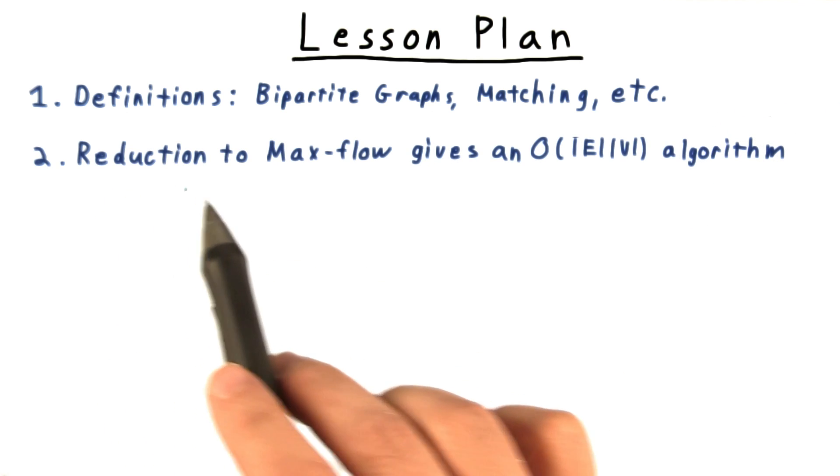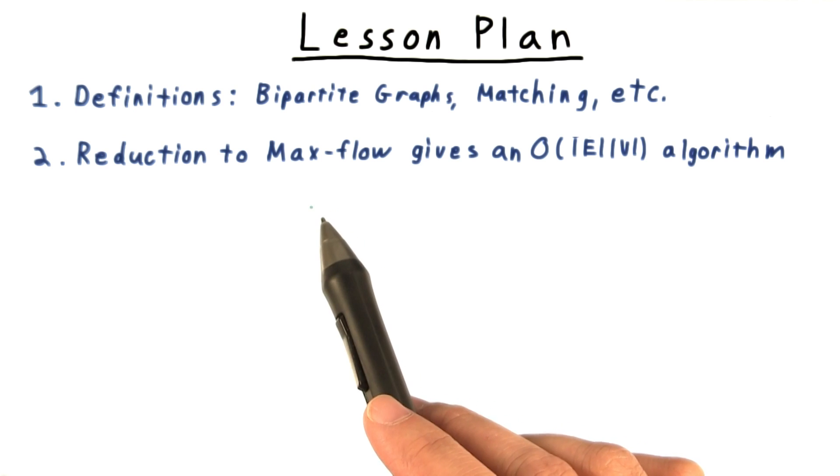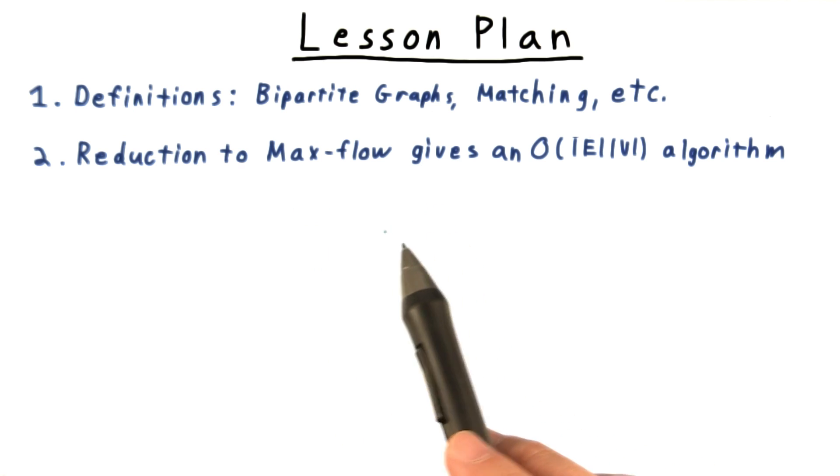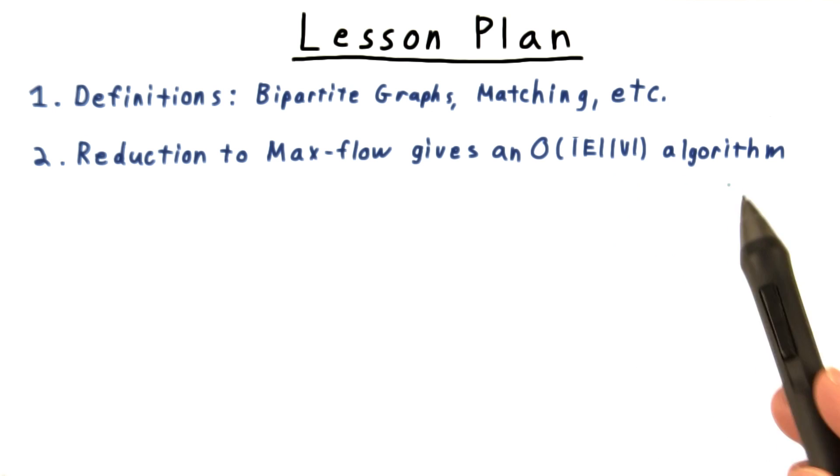Then, we'll show how the problem of finding a maximum matching can be reduced to the problem of finding a maximum flow. And this will give us an O(|E||V|) algorithm.